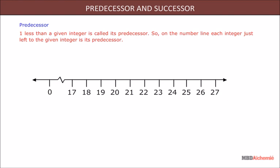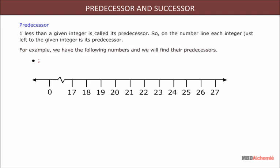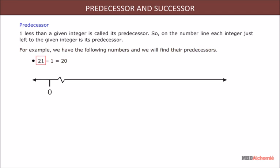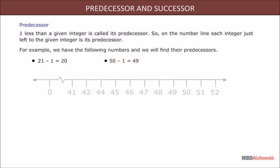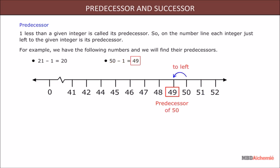Predecessor and successor: one less than a given integer is called its predecessor. On the number line, each integer just to the left of the given integer is its predecessor. For example: 21 minus 1 is equal to 20, so 20 is the predecessor of 21; 50 minus 1 is equal to 49, so 49 is the predecessor of 50.